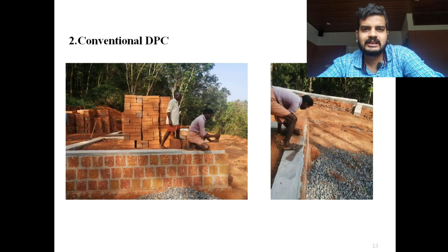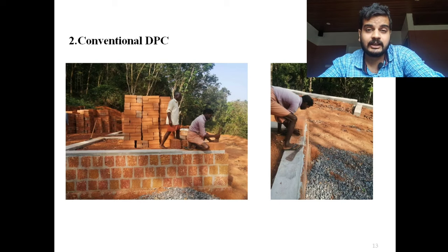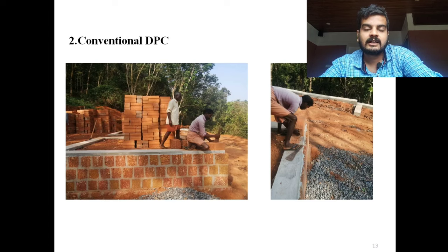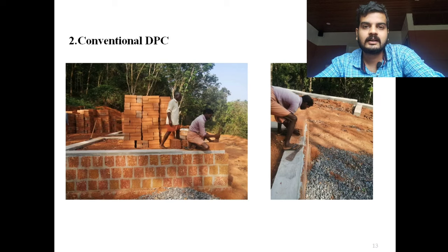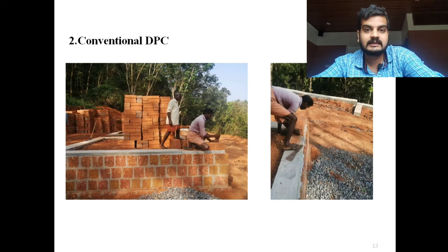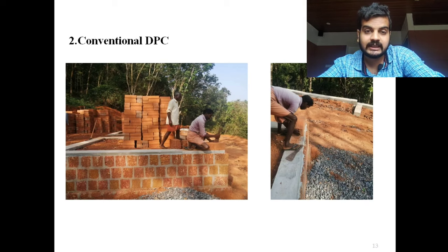After the foundation, we give one DPC — Damp Proof Concrete — of around three inches. The purpose of DPC is to reduce dampness in the superstructure by blocking moisture from the earth from getting into the walls. It is a must, especially since we are not giving any plastering over the wall. We are also not giving a plinth beam, so the DPC is very, very important. The thickness of the DPC is eight inches because we are using eight-inch thickness bricks.